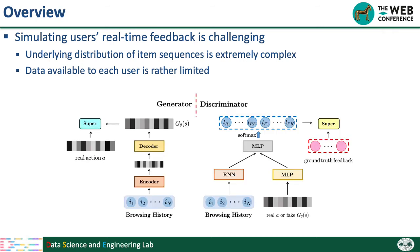To tackle these two challenges, we propose a user simulator upon the GAN framework. Here, the generator aims to learn the item distribution from the user's historical data and then generate fake items that are similar to the real ones. The discriminator wants to distinguish real and fake items, and at the same time it aims to predict the type of user's real-time feedback on the items. In the following, I will introduce the architecture of the generator and the discriminator.